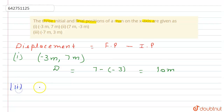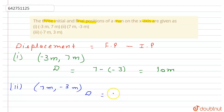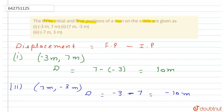In the second part, the initial position is seven meters and the final position is minus three meters. So displacement equals final minus initial, which is minus three minus seven, which equals minus 10 meters.